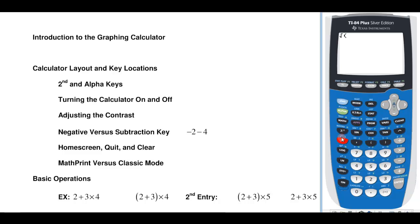You'll notice that the square root is the same color as the second button. If I want to clear my screen I would just hit the clear button and that'll keep it nice and clean. If I were to hit the alpha button I would then be able to access one of the alpha characters, and those are the same color as the alpha button. So if I hit J, there's the letter J.